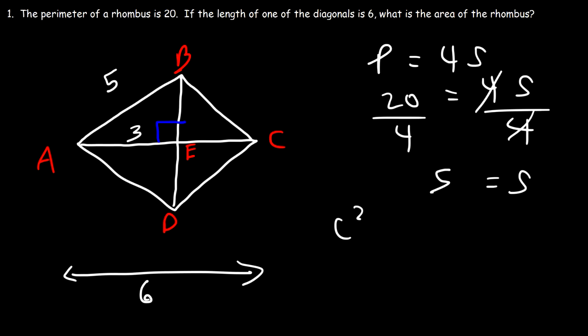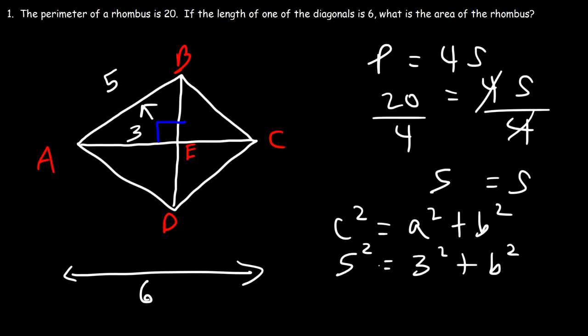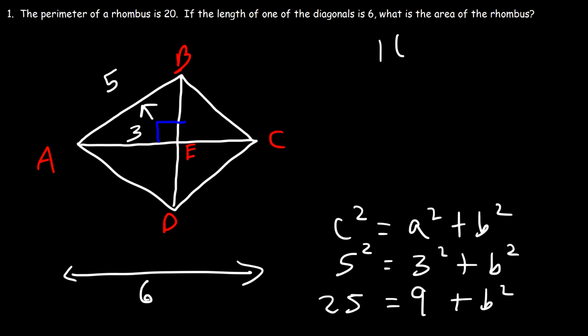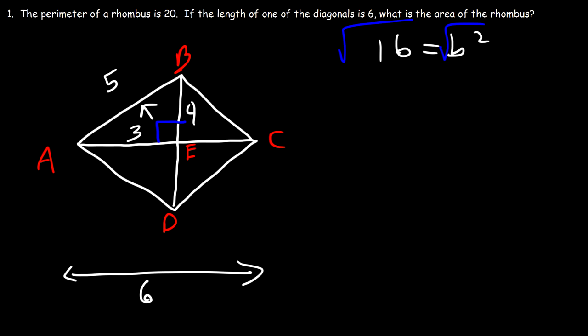Using the Pythagorean theorem to find BE: c squared equals a squared plus b squared. The hypotenuse c is 5 and a is 3. So 5 squared is 25, 3 squared is 9, and 25 minus 9 is 16. Taking the square root gives 4, so we have a 3-4-5 right triangle, and BE is 4 units.